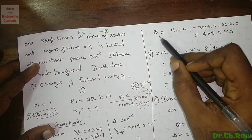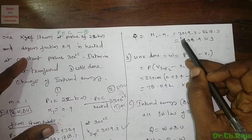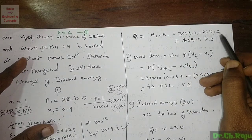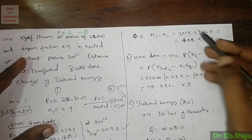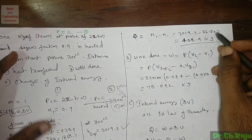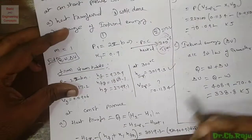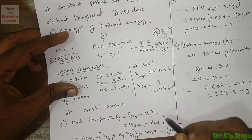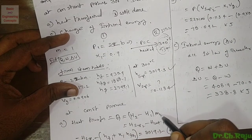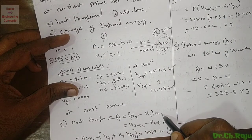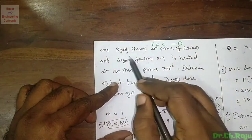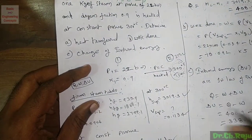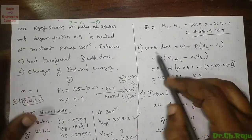Q = 3019.3 - 2610 ≈ 408.9 kJ. Since 1 kg of steam is specified, there is no need to multiply by mass.